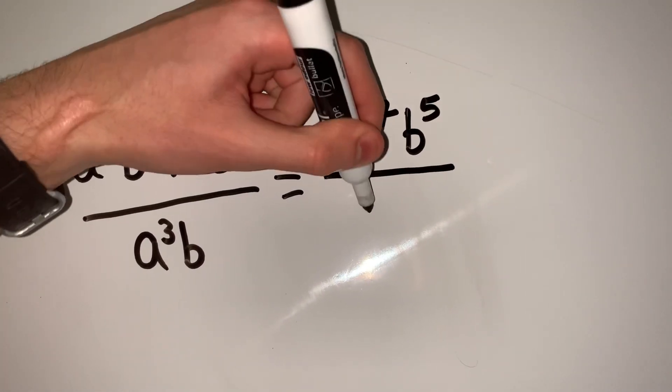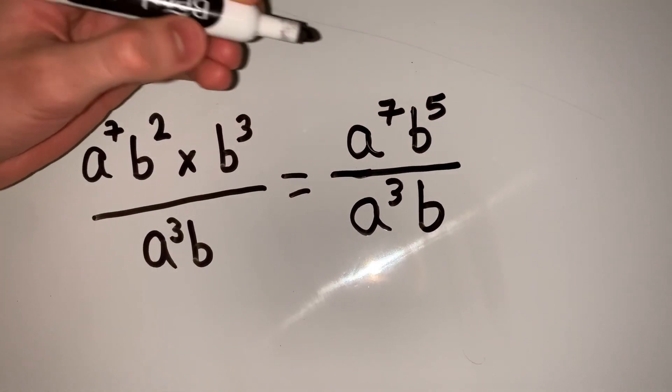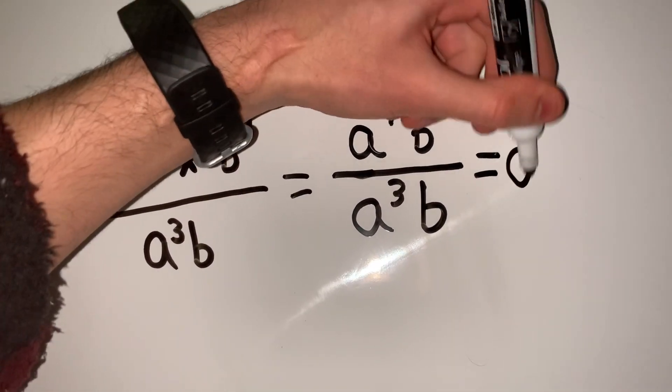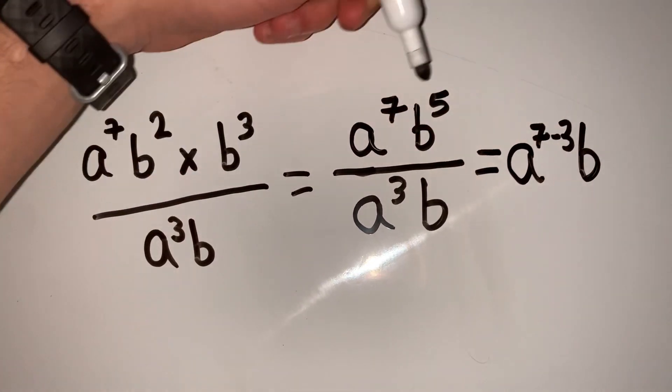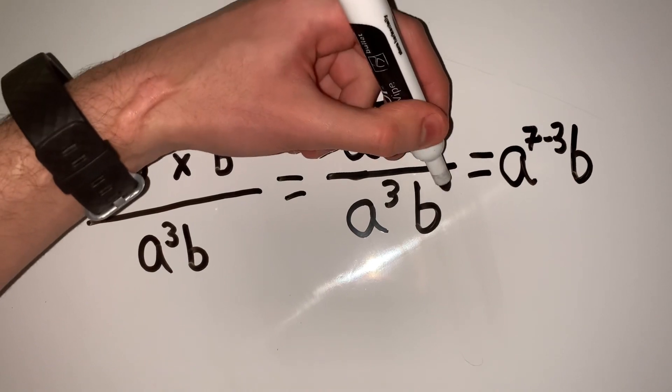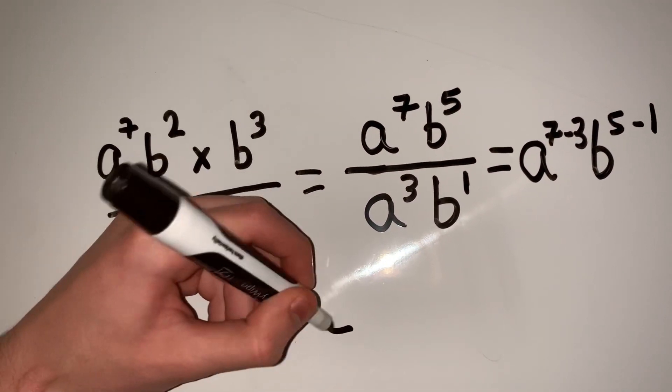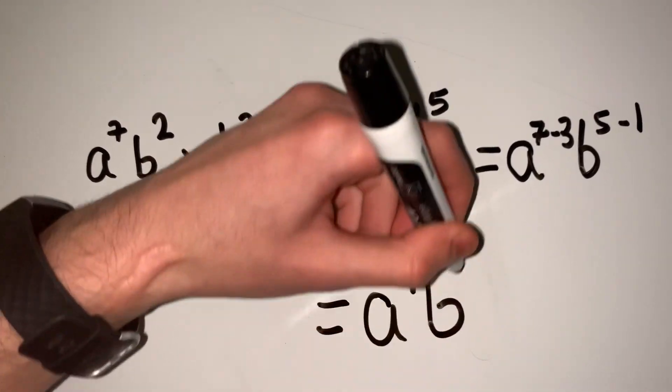Remember when we divide, we subtract the powers. So we get a^(7-3) multiplied by b^5. Imagine there's a 1 here for b, so 5 minus 1. This equals a^4 times b^4.